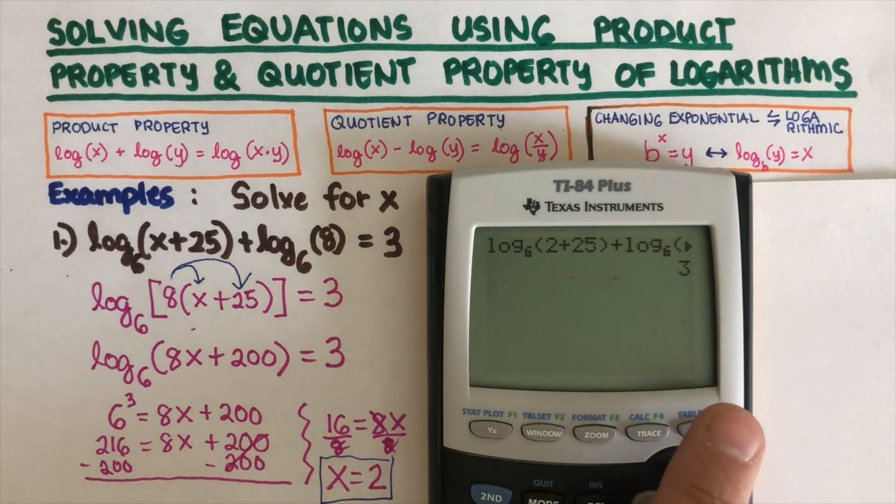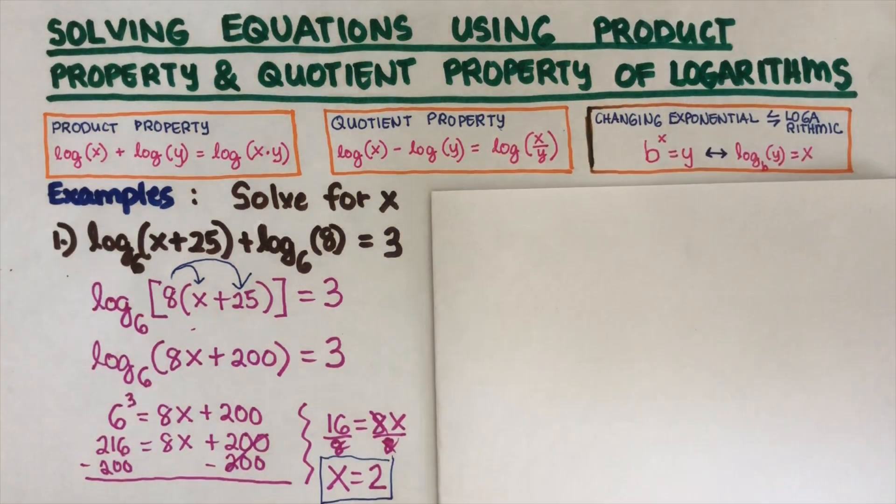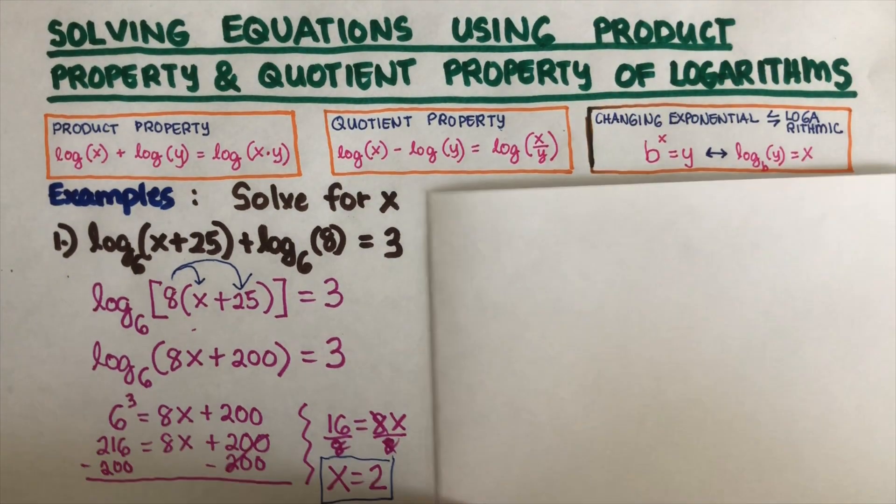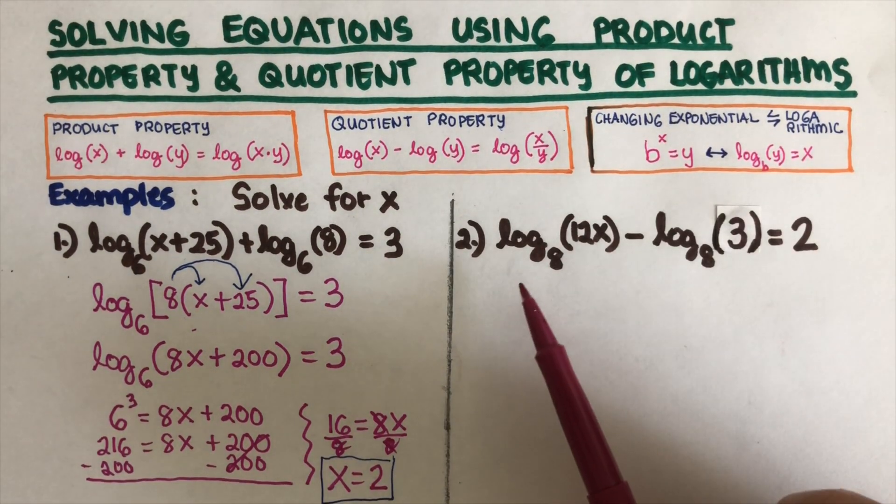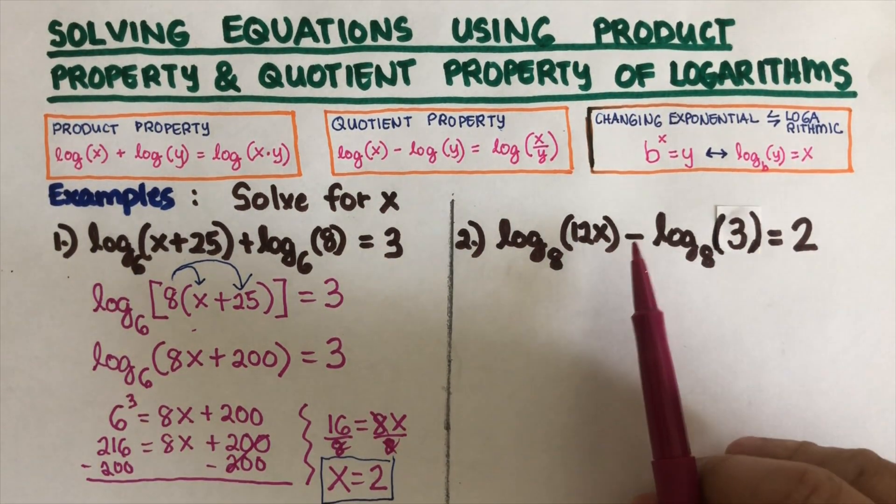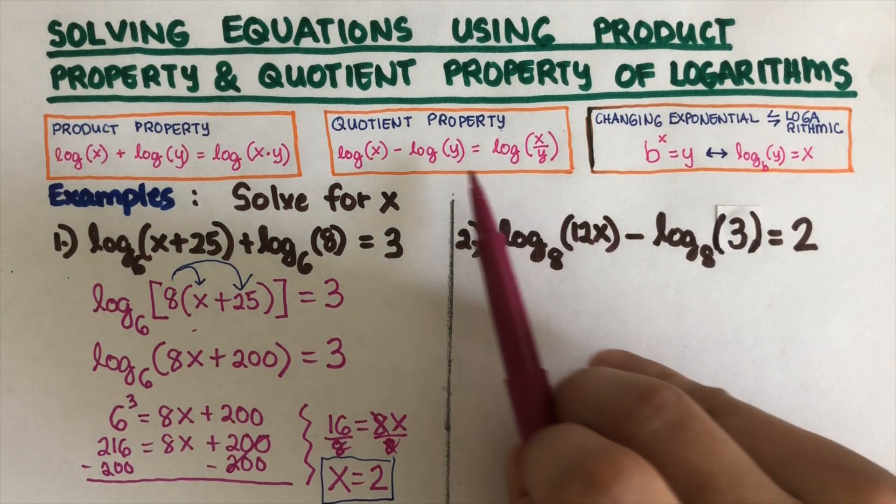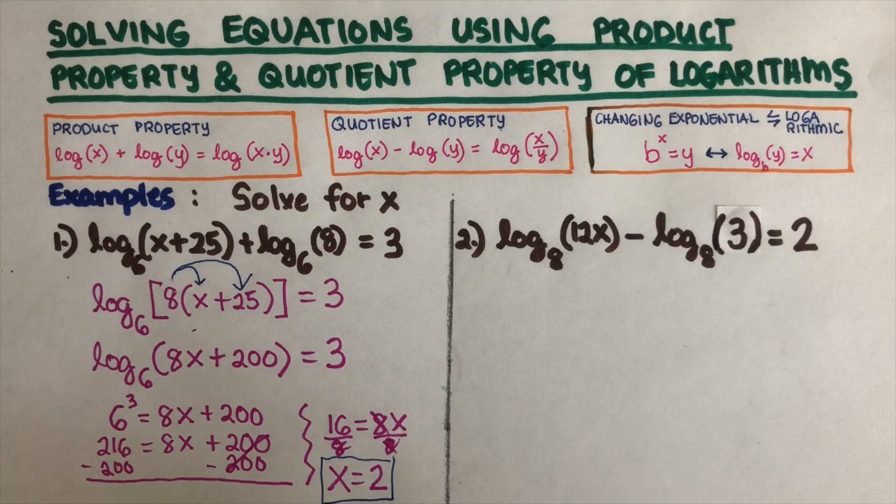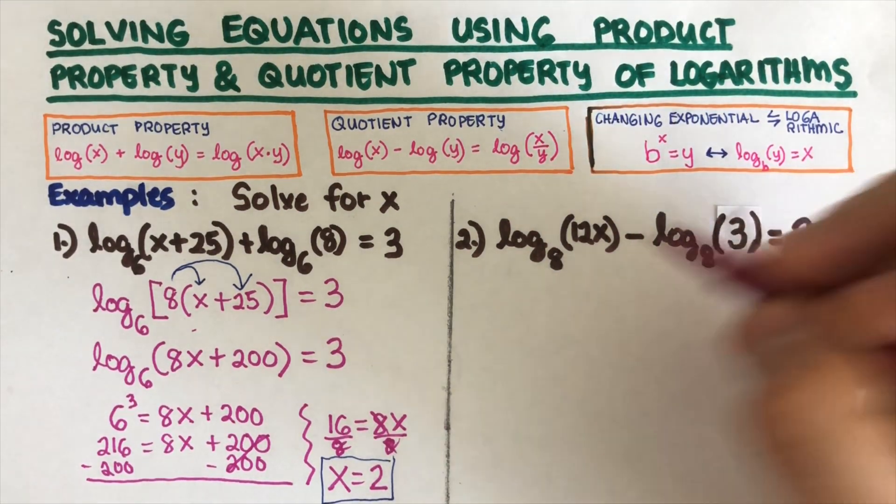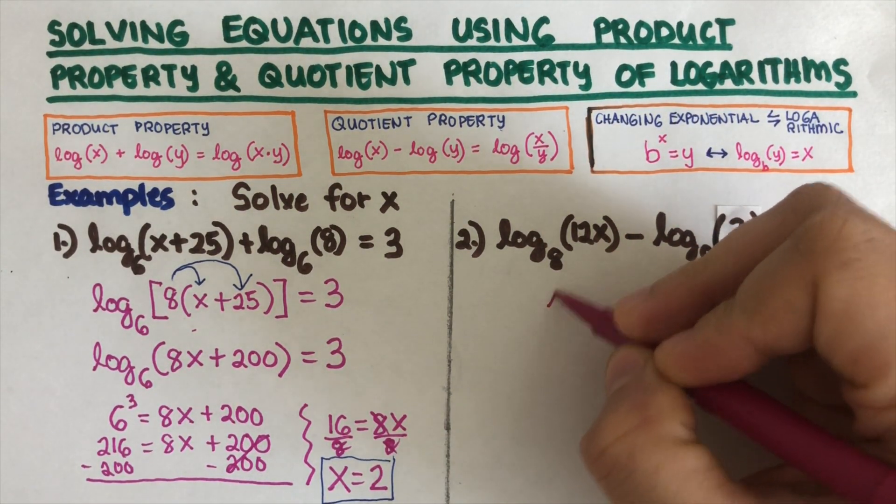Now let's have the second example here, so that is this equation right here. Since this is a minus, we are going to use the quotient property. We can go ahead and rewrite this to be log of...